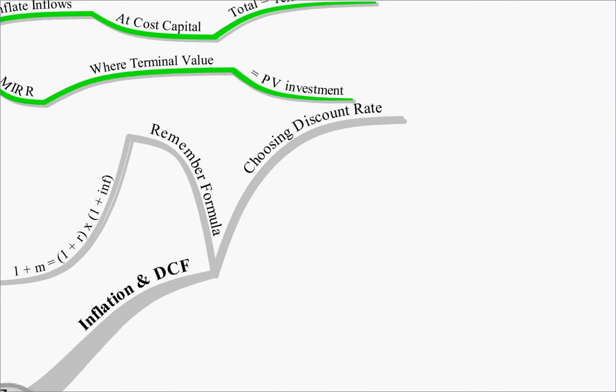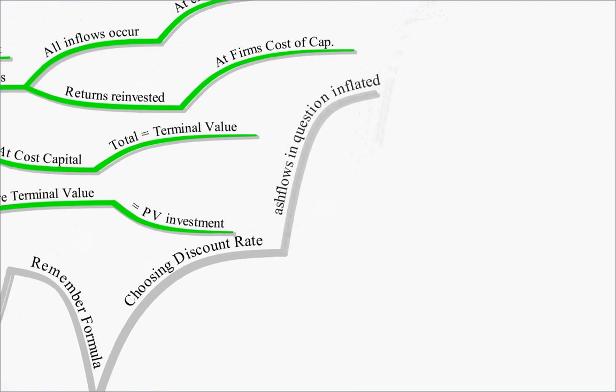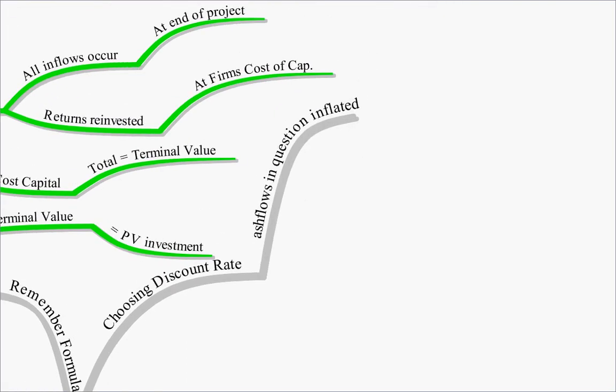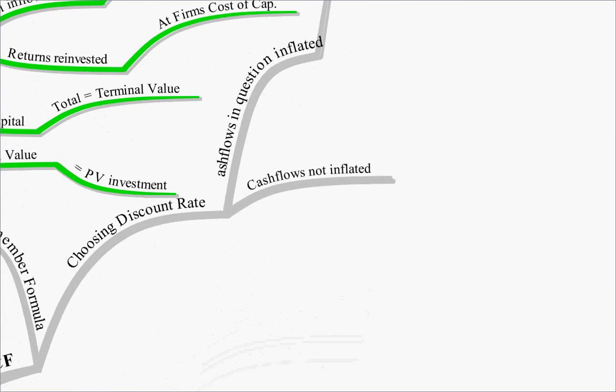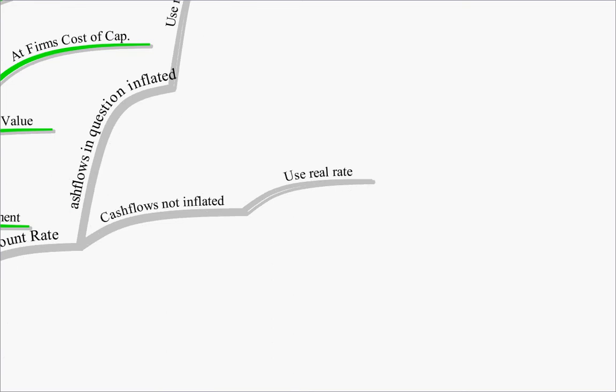So, how do we choose a discount rate under these conditions, if we're given several or all of these in the exam? Well, if the cash flows in the question are inflated, use the money rate. If the cash flows are not inflated, use the real rate.